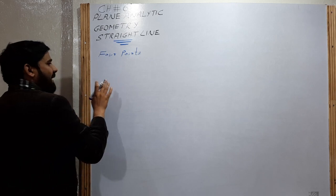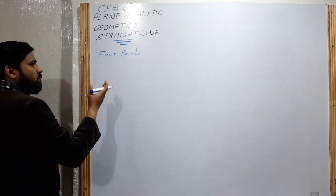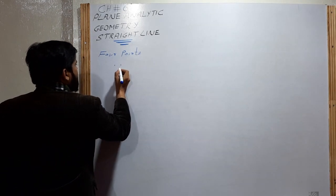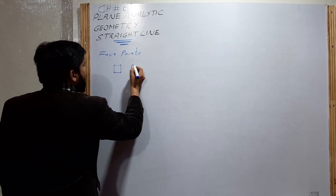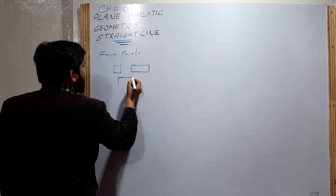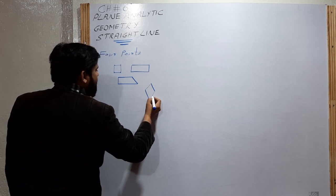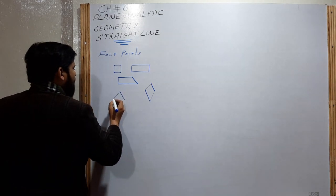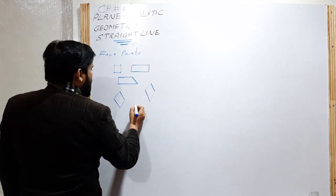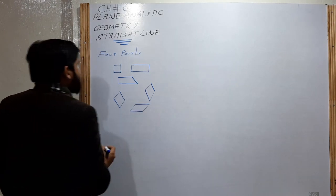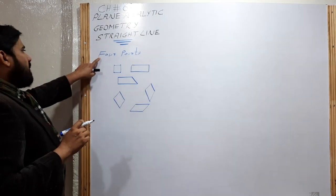In general, any four-sided figure is called a quadrilateral. Four points may represent a square, a rectangle, a parallelogram, a kite, or a rhombus — these are the types of quadrilateral. These diagrams are formed by four points; in each case there are four points.